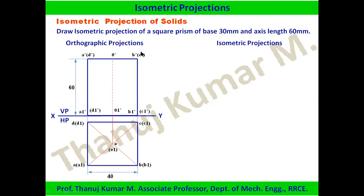Annotations are very important for the orthographic view, but they are not required for the isometric view. This is how we draw the orthographic position of the prism in its front position. Only the front position is required — no other positions are needed for isometric view projections.